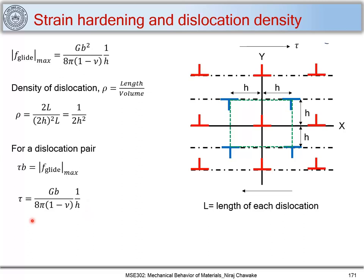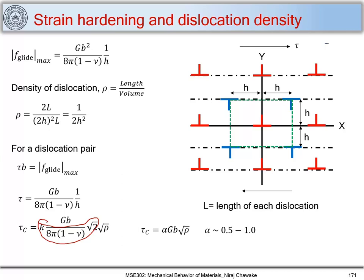Now I replace 1/h using the dislocation density relation — since ρ = 1/(2h²), we get 1/h = √(2ρ). Substituting, the critical shear stress τ_c = [Gb / 8π(1−μ)] × √(2ρ). The prefactor terms are constant and can be written as α, giving τ_c = αGb√ρ, where α takes values between 0.5 and 1.